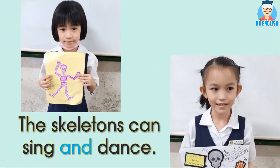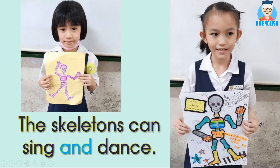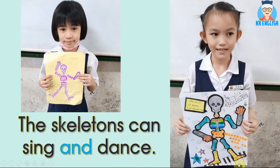为什么有s呢？Let's see. 哦，因为有两个skeleton。The skeleton can't sing and dance — 所以我们用了and。他可以做两个动作，一个是sing，你看有音符，and dance，还可以跳舞。你看他在键盘上，dance on the keyboard，在键盘上跳舞。